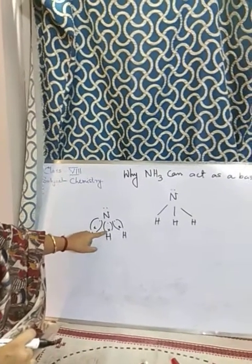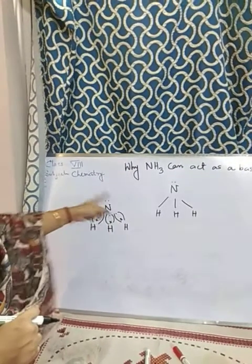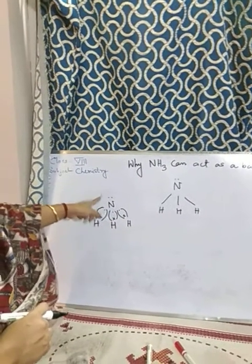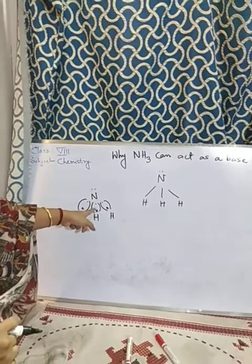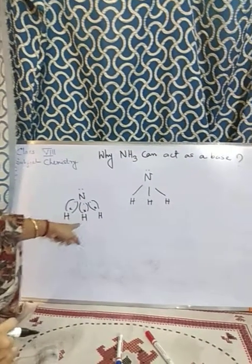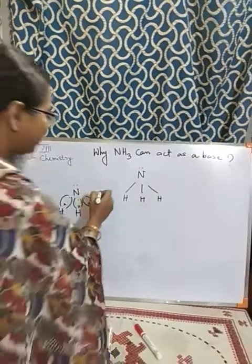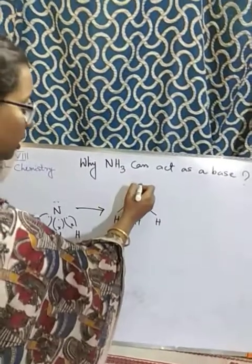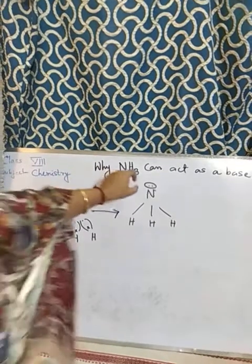Similarly for each hydrogen, one electron from nitrogen and one from the hydrogen. As there are five electrons in the outermost shell of nitrogen, three are involved in bond formation with three hydrogens and two electrons are left. So from this we get the ammonia structure with one lone pair.